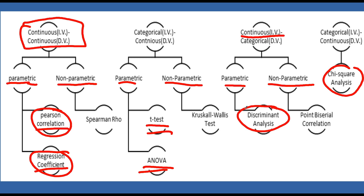These are all different tools that are commonly used. In my particular discipline, we use a lot of Pearson and a lot of regression. We love ANOVA and t-test. Discriminant analysis is not as common, and chi-square analysis is not as common either, because a lot of times we prefer to use t-test instead. But again, these are all appropriate tools, and the tool you use depends on who you're writing for.